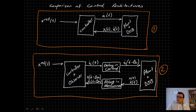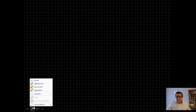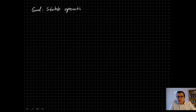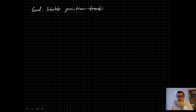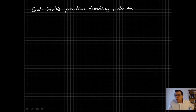Moving from a classical control architecture to a motion control system with time delay, you must account for measurement delay throughout the controller and observer structure. This is critically important for stable operation. Our goal here is to provide stable position tracking under the existence of time delay.